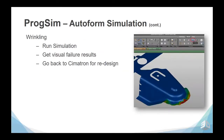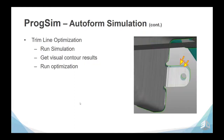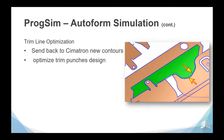Prog Sim can detect wrinkling. By running the simulation, we can get visual failure results, and once we go back to Symmetron we can redesign the affected area to improve and prevent problems. Prog Sim will also give us trim line optimization — you get the visual contour results, run the optimization, and that contour can then be used back in Symmetron to redesign the trim line more correctly, as seen here.